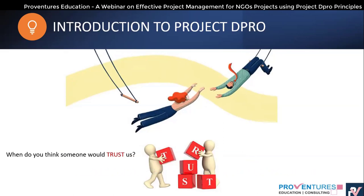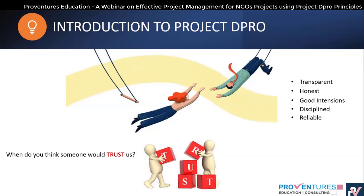Let us see the characteristic features one should have so the other person can trust us. Transparency is very important. We need to be transparent, honest, and have good intentions — as Joyce and Sharmila mentioned. We also need to be disciplined, reliable, have goodwill, and the right skill set. If the skill set is missing, the trust is violated.